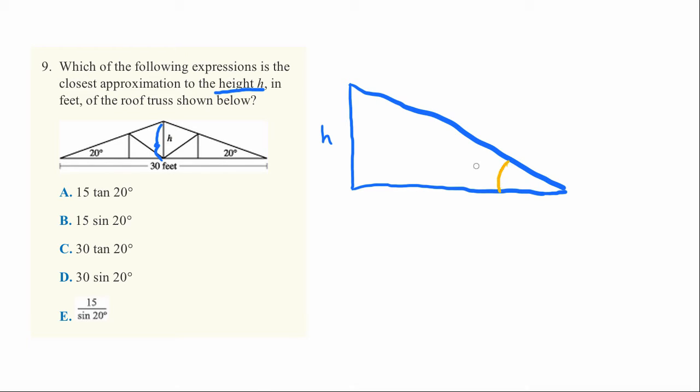One, we know this angle right here is a 20 degree angle. Second, we know the length of the base of the triangle. So the total distance across this whole thing is 30 feet. And the distance from just this part, just the one half of the figure, is 15 feet. The other side is 15 feet as well, half of 30.